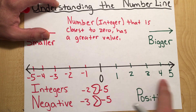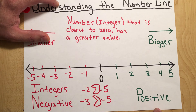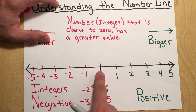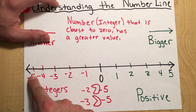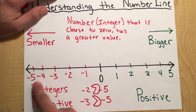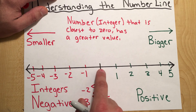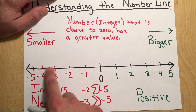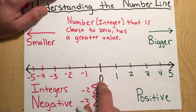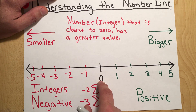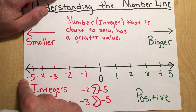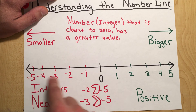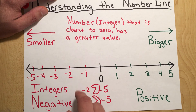Again, here we have our number line. Right in the center we have zero. To the right we have all of our positive numbers. To the left of zero we have all of our negative numbers. When we're comparing only integers, the negative integers closest to zero are the ones that have the greatest value. The ones further away from zero have the smaller or least value.